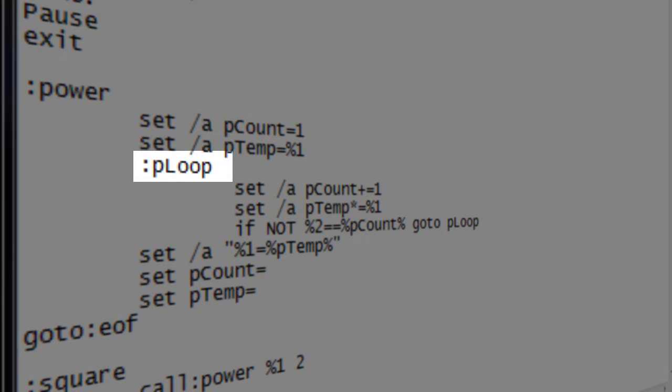At this point we create our loop, I called it ploop. Within the loop we increment our pcount variable by 1, and then set the temporary variable to itself times the original number, or the first parameter, using the times equals technique.